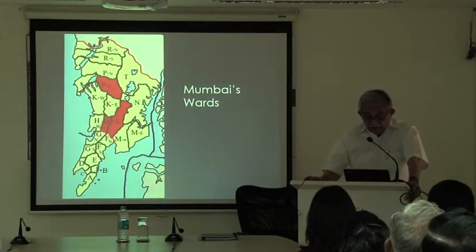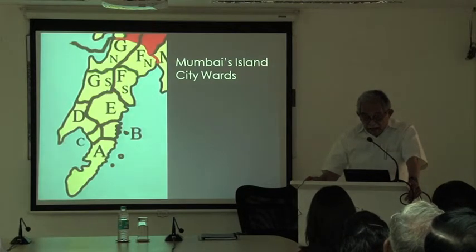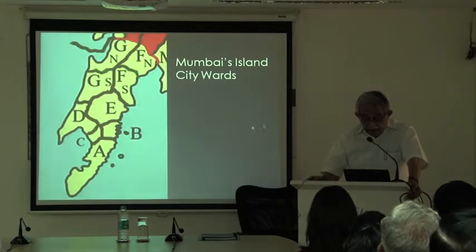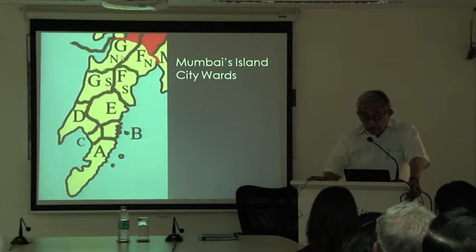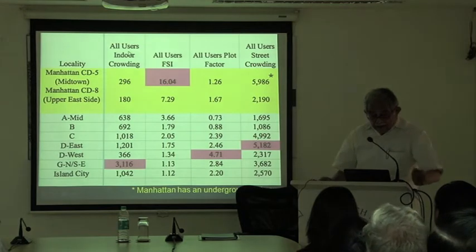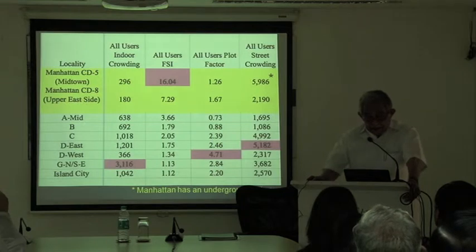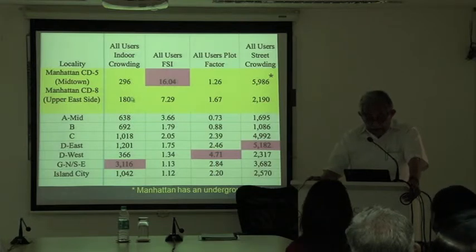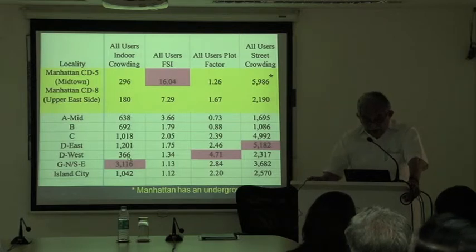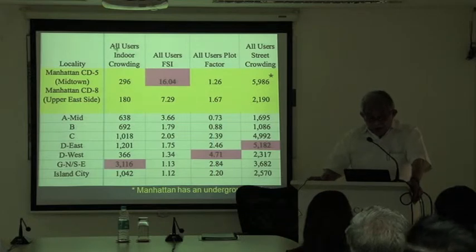Let's take a look at Mumbai's wards. This is a map of all the wards. In the island city wards: C ward is Bhuleshwar but also includes part of Marine Drive; B ward has a lot of the port area; E ward has the port area; D ward east is Grant Road; D ward west is Malabar Hill; and G North includes Dharavi. Here is a table that compares numbers between Manhattan and the island city. All-users indoor crowding — that is, jobs and homes — is 296 in CD5 and 180 in CD8. In our wards it is 600, 600, 1,200, 366 in D West (Malabar Hill), and 3,116 in G North. Our indoor crowding is way above Manhattan's already.